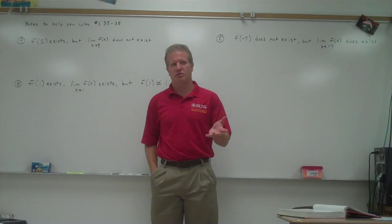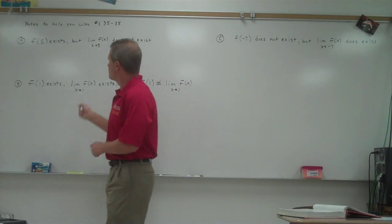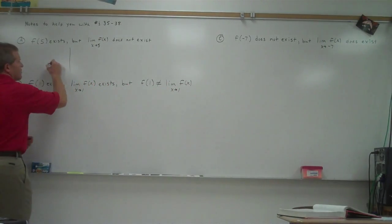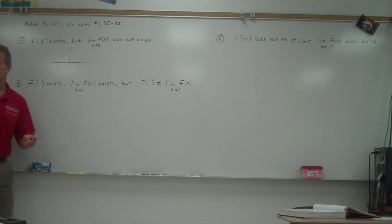All right, so there's more than one solution to these. Let me give you an example. f of 5 existing means that there is going to be a point above 5 or below 5.